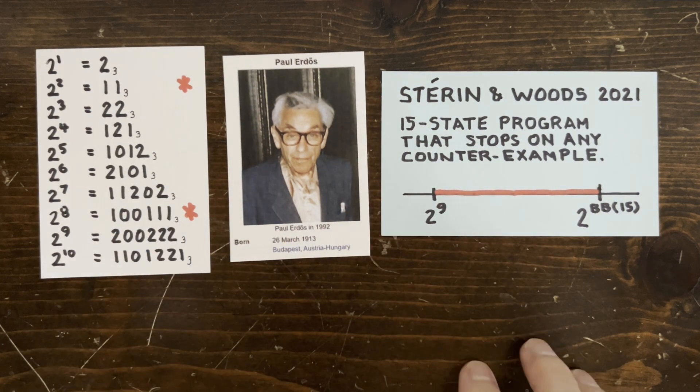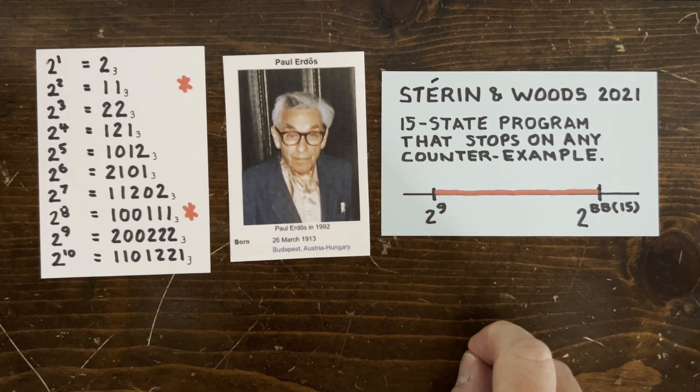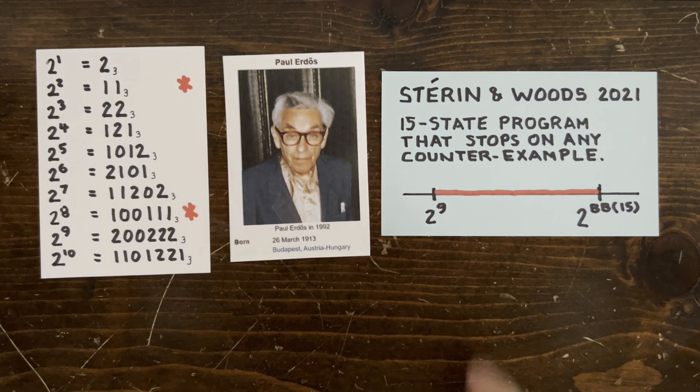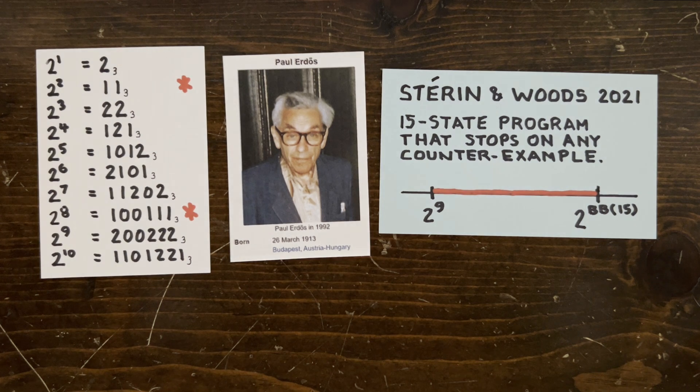Amazingly, Tristan Sterin and Damian Woods built a 15-state Turing machine that halts on any counterexample to the Erdős conjecture. So that conjecture is really about what happens between two to the eighth and two to the BB(15). If there are no counterexamples in that finite range, then there are no counterexamples ever.